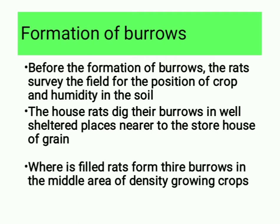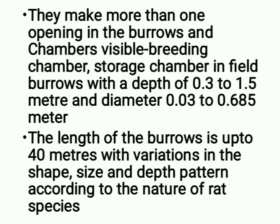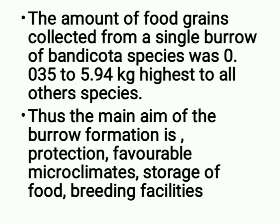House rats dig their burrows in well-sheltered places near the storehouse of grain, whereas field rats form their burrows in the middle area of densely growing crops. They make more than one opening in the burrows with chambers: a breeding chamber and a storage chamber in field burrows, with a depth of 0.3 to 1.5 meters and diameter 0.03 to 0.685 meters. The amount of food grains collected from a single burrow of Bandicota species was 0.035 to 5.94 kg, the highest of all other species.